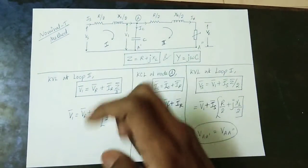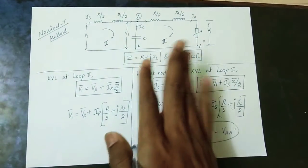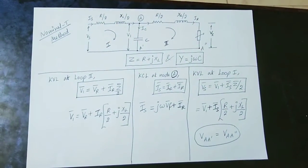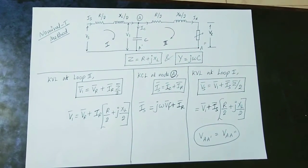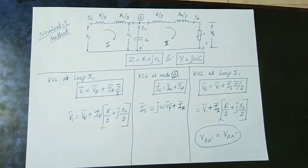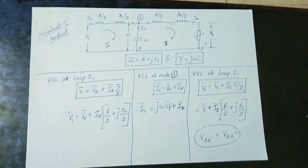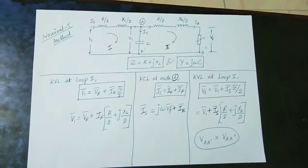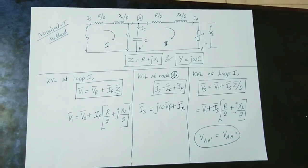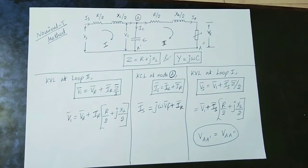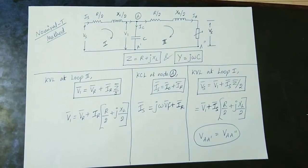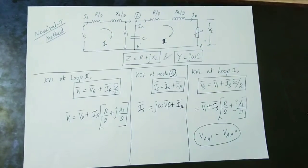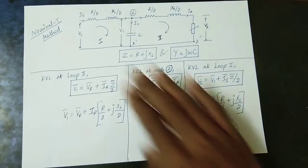We will talk about the total capacitance and how it is distributed. In the nominal T structure, the impedance is split, and the capacitor is placed in the center. In the pi model, on the other hand, the capacitors are on the two sides — one C/2 on each side. The analysis of the T model is easy.